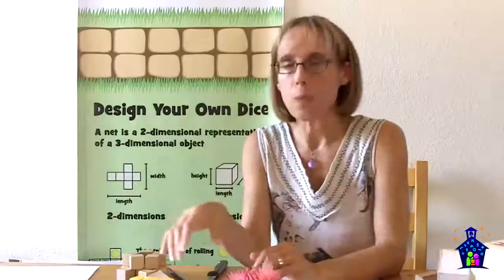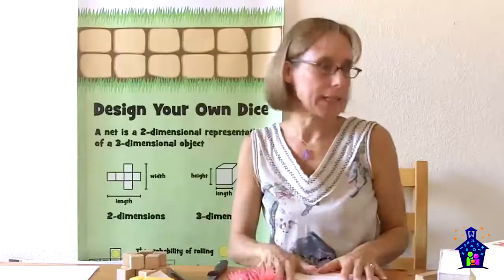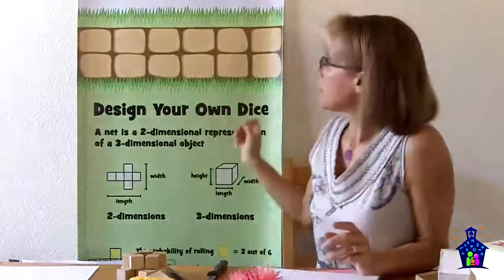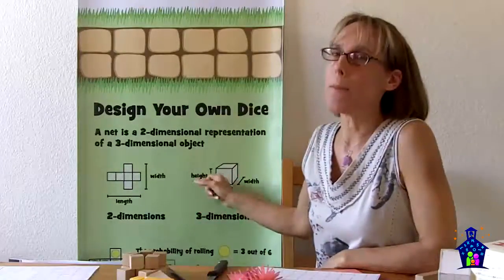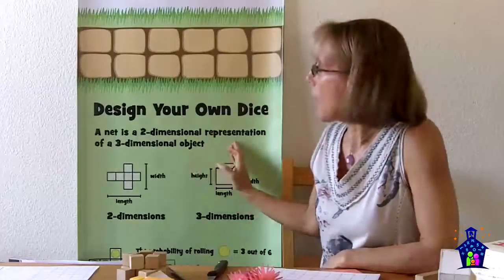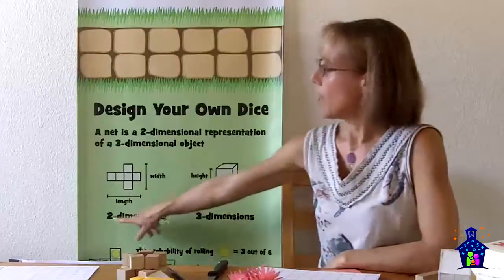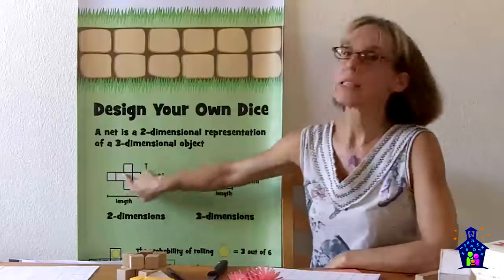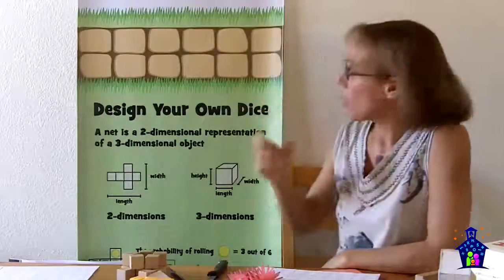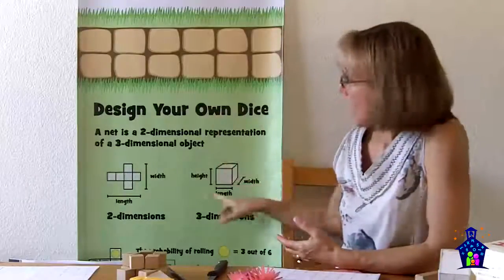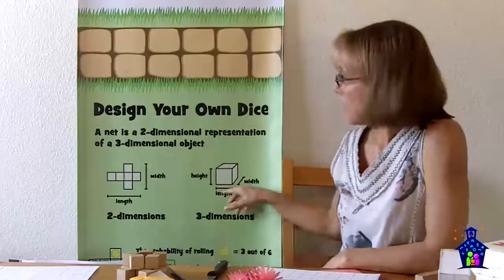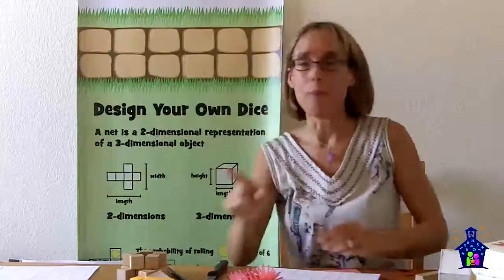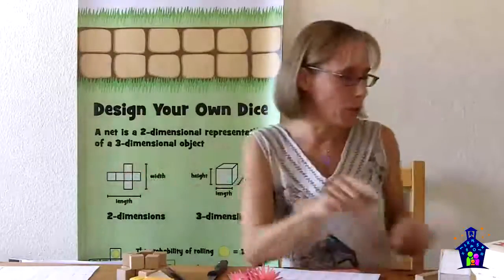Okay, so before they can make their box, we need to talk about something called nets. Now, a net is a two-dimensional representation of a three-dimensional object. And this banner, this comes from our math medley family math night camp. This banner does a nice job of showing two dimensions here. You've got your length and your width. And this is a net because if I cut this out and I folded it, it would create a three-dimensional object that would be a cube. And so the third dimension, then, is height, length, width, and height. Now, I don't show this to the kids because I want them to create a net on their own.